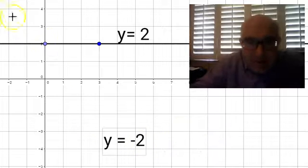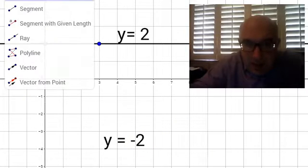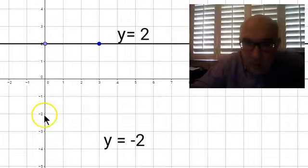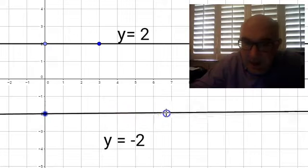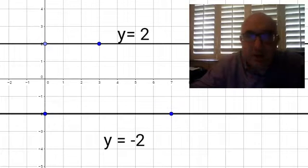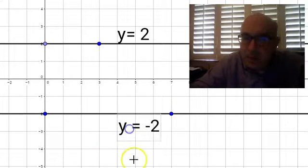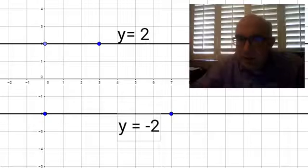So y equals negative 2 would imply that we are down here at y equaling negative 2, and that this would be our line. So I just wanted to quickly mention about horizontal and vertical lines.